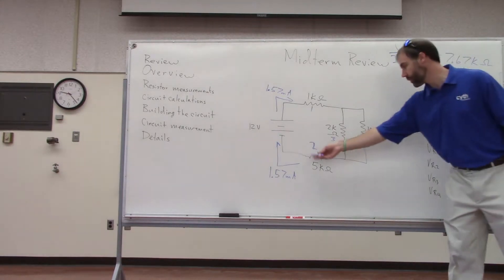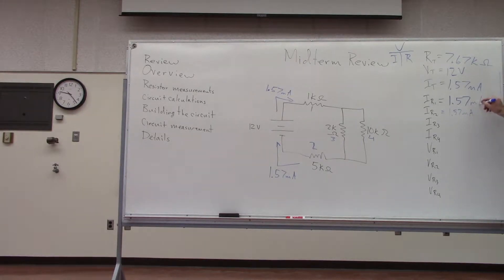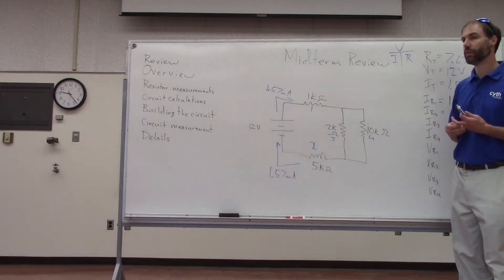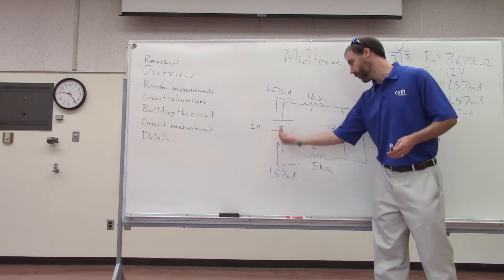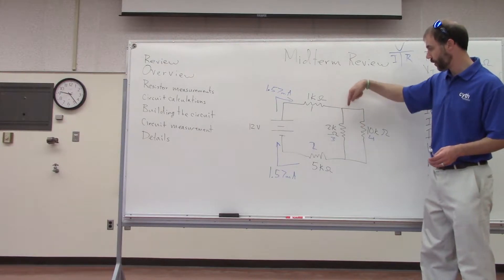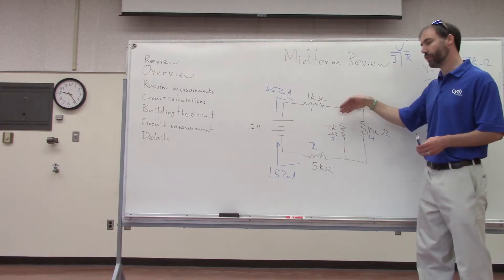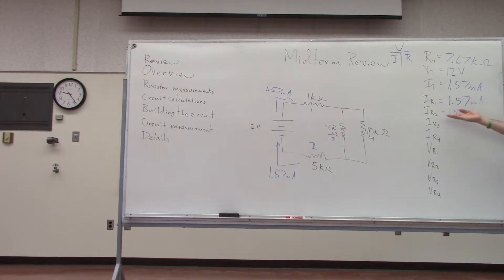That's 1.57 milliamps for R2 as well, because the current coming out of R2 only has one path before it gets back into the power supply. However, there are two paths where the current can go for R3 and R4, so we don't know exactly how much goes on each side yet. We've gotten the current for R1 and R2 — that's a good start.